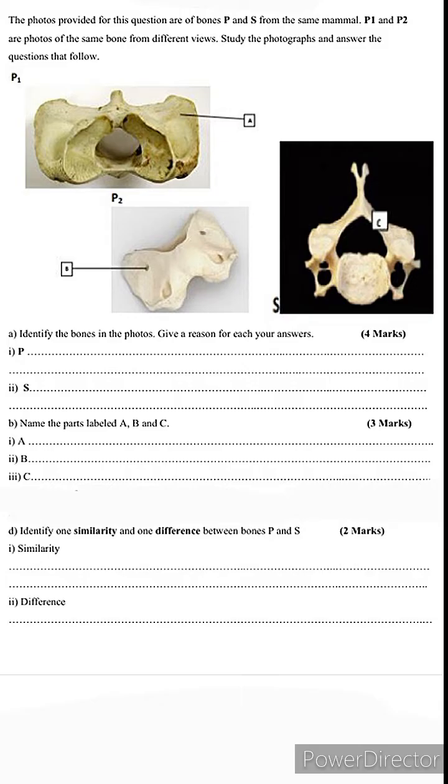We have three photographs but of only two bones. Photograph P1 and P2 are of the same bone but from different views. We also have another bone labeled as S. Part A: identify the bones in the photos. Give a reason for each of your answers. We are supposed to identify bone P and bone S.